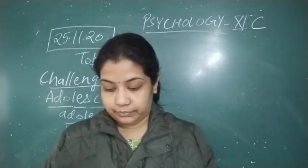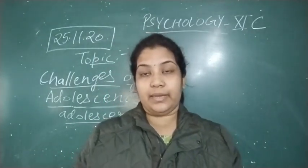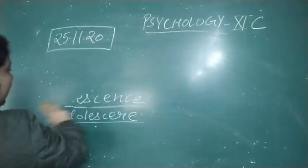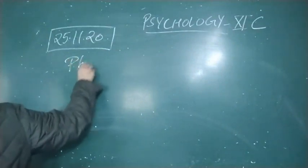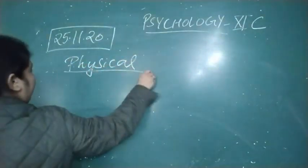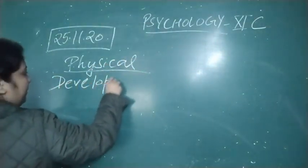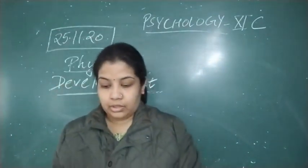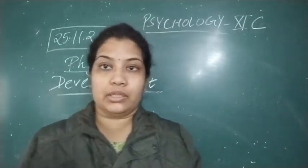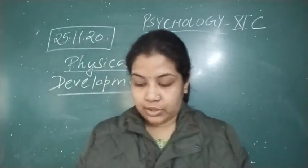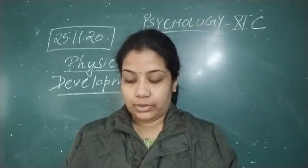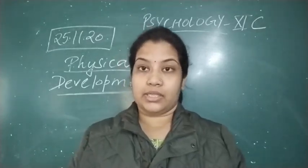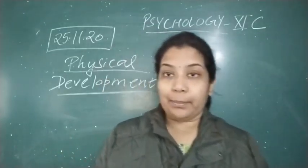Now let us study what changes take place during adolescence. First, let us study about physical development during adolescence. Puberty or sexual maturity marks the end of childhood and signifies the beginning of adolescence, which is characterized by dramatic physical changes in both growth rate and sexual characteristics — there are many sexual and biological rapid changes in this stage.